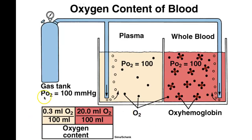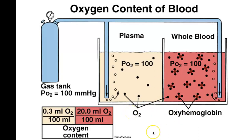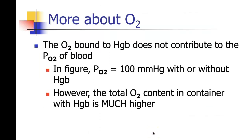Looking at the oxygen content of blood: imagine a gas tank where the partial pressure of oxygen is 100. When we get it diffused into the blood, we get partial pressure of oxygen in the plasma and the blood both at 100. But because of the binding ability of oxyhemoglobin, we get way more oxygen able to be dissolved in whole blood than in plasma alone. In terms of total oxygen content, the pressures are the same, but the oxygen content differs — we can only get about 0.3 milliliters of oxygen dissolved into plasma, whereas whole blood with red blood cells can carry 20. So the oxygen bound in hemoglobin does not contribute to the pressure of blood — that's why you can have the same pressure in plasma and in whole blood, but a much higher total oxygen content in the container with hemoglobin.